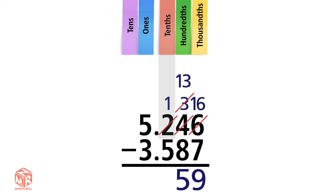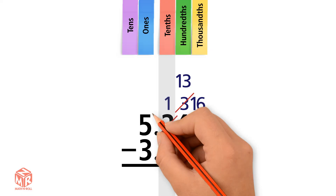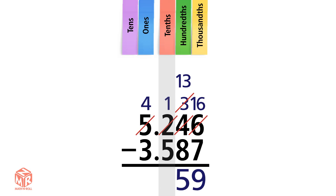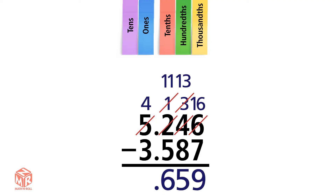Next, subtract the tenths. Can we subtract 5 from 1? No, so we regroup again. We're left with 4 ones and 11 tenths. Subtract the tenths: 11 minus 5 equals 6, so we write 6 in the tenths column and we bring down the decimal point. Now subtract the ones: 4 minus 3 equals 1. So the answer is 1 and 659 thousandths.